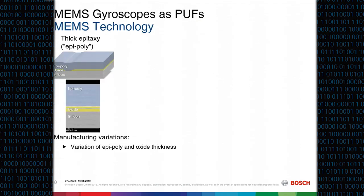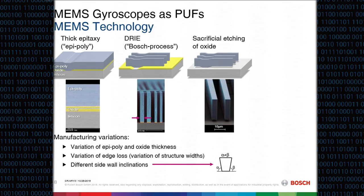Now I come to the manufacturing process. I will outline three major steps and explain the manufacturing variations inherent in them. The first step is the deposition of oxide and epitaxial polysilicon layers, where you get variation in layer thicknesses. The second major step is the etching process of the structures, producing variation in beam widths — influencing spring stiffness — and also side wall inclinations that differ between the two sides of a beam, creating asymmetry in the system.